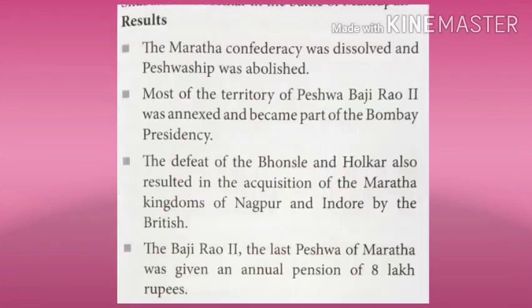Results: The Maratha Confederacy was dissolved and the Peshwaship was abolished. Most of the territory of Peshwa Baji Rao II was annexed and became part of the Bombay Presidency. The defeat of the Bhonsle and Holkar also resulted in the acquisition of the Maratha kingdoms of Nagpur and Indore by the British.